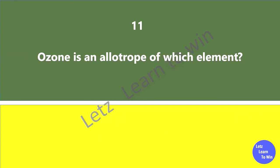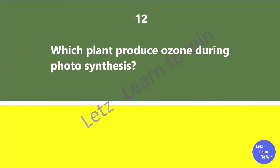Ozone is an allotrope of which element? Oxygen. Which plant produces ozone during photosynthesis? Tulsi.